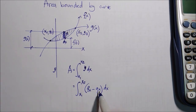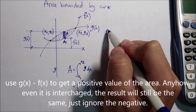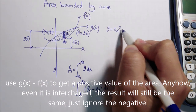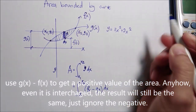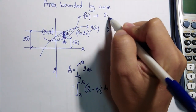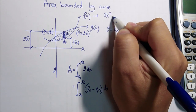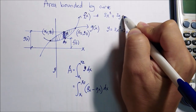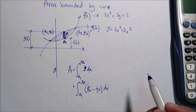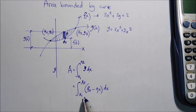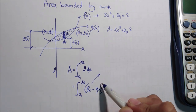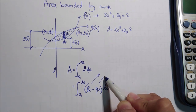For example, if one function is y equals 3x cubed plus 2x squared and the other is x squared plus 3y equals 2, this formula says take the value of y from the first function less the value of y from the second function.